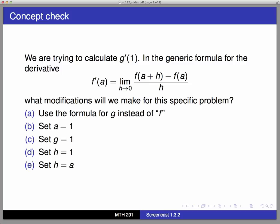h, remember, is always a small degree of separation between two points that I'm using to calculate the slope of a secant line. So that is going to be a changeable value, and I'm going to change it by letting it go to 0. So I don't want to set h = 1, nor do I want to set this equal to a, because a is going to be equal to 1. So d and e are really the same answer.